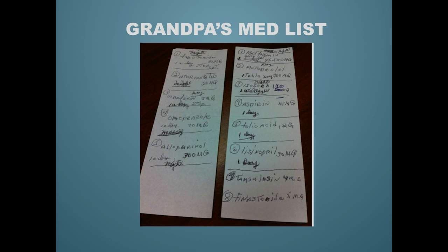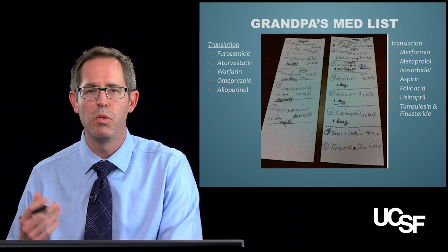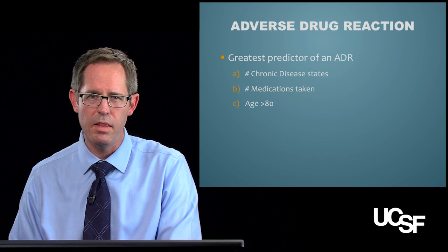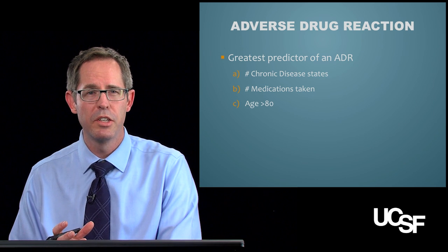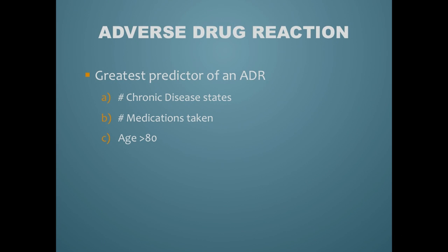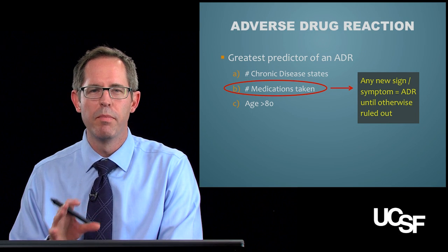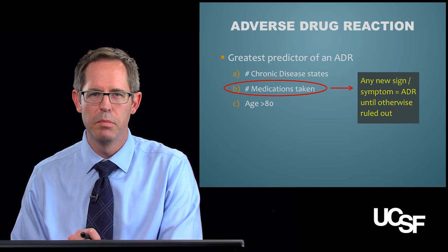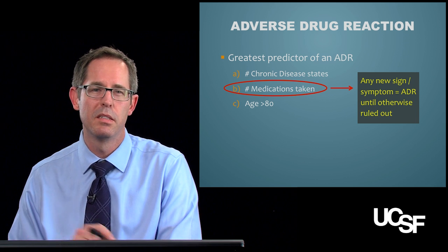Take a second and see how much of this actually makes sense to you. On the left-hand side you have furosemide, atorvastatin, warfarin, omeprazole, and allopurinol — and on the right side, a whole other list of meds. You have 13 altogether. So here's grandpa: 80 years old, lots of chronic disease, and a lot of medications. Which one of these do you think is the greatest predictor of an adverse drug event? If you picked B, you were right. The number of medications is so great that any time grandpa comes to you with a new sign or symptom, you should consider it to be an adverse drug reaction until you've proven otherwise.